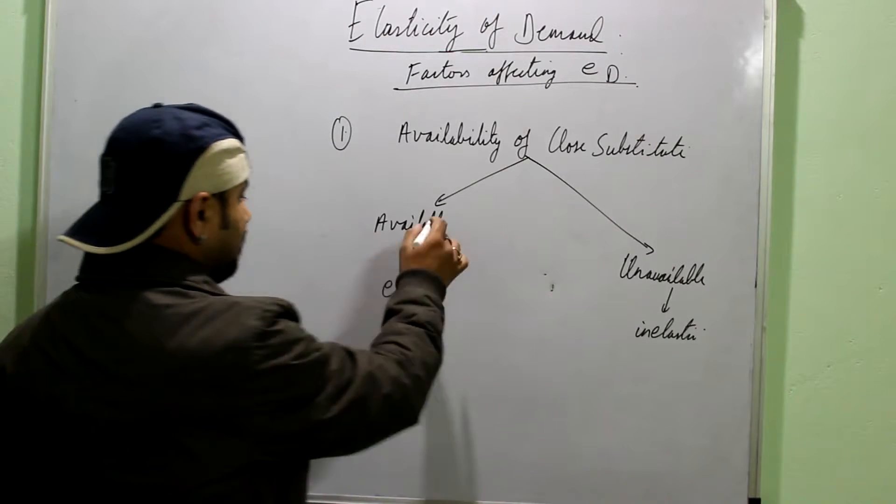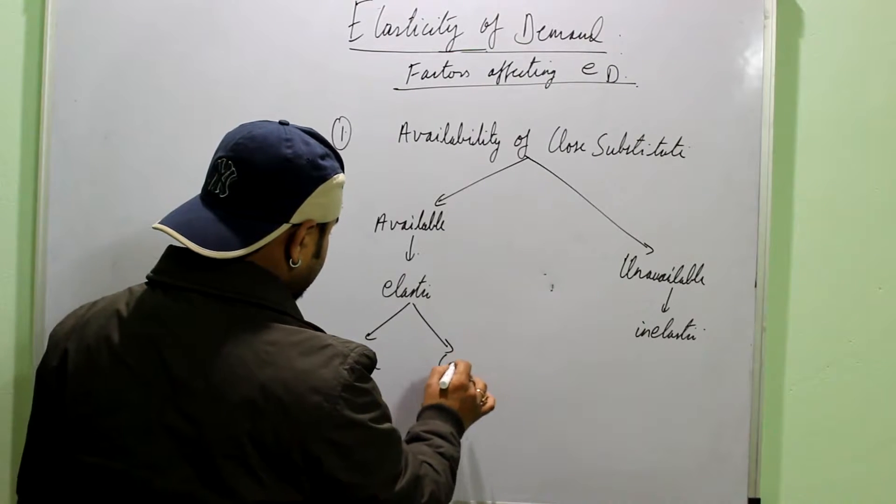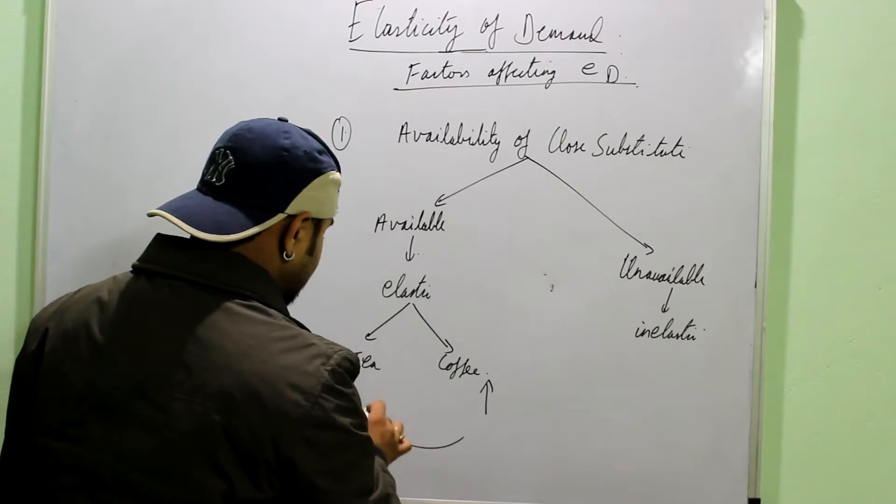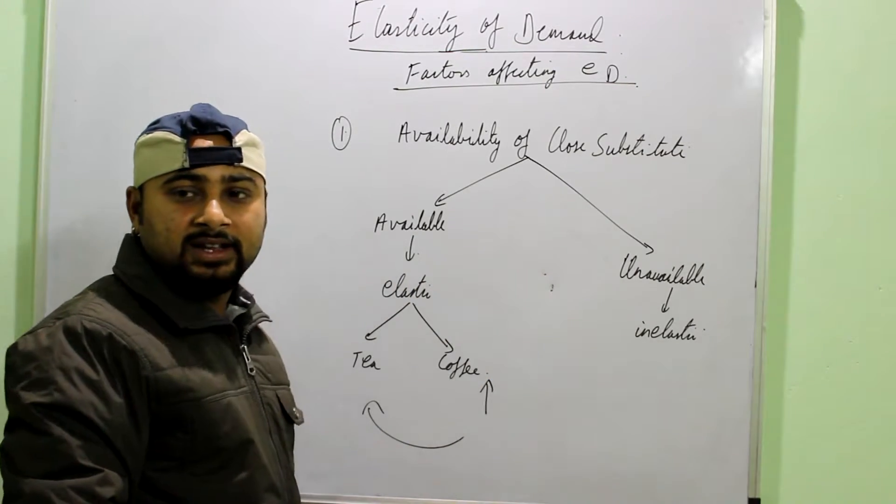Simply says that, suppose you talk about tea and coffee. If one price of one commodity rises, what you can do? You can buy the other commodity. You can respond to the change in the price.